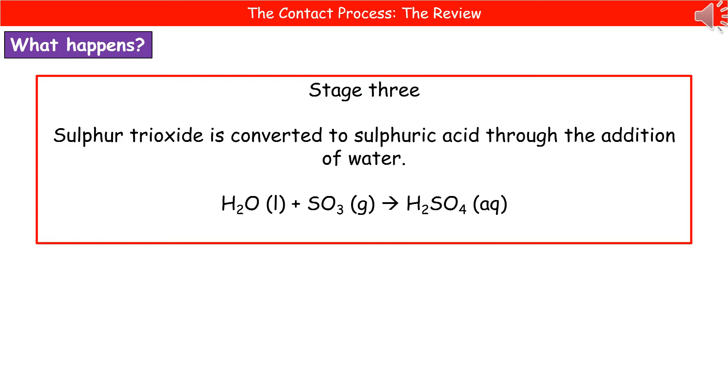The third and final stage is where sulfur trioxide is converted into sulfuric acid, and we do that by adding water to it. So water plus sulfur trioxide makes sulfuric acid, which is H2SO4.